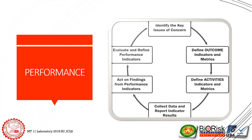The last component of the AMP model is performance. It includes control, assurance, and improvements, and constantly monitors and evaluates mitigation measures to see that they are working as planned. Otherwise, a corrective action will be planned and implemented to protect the entire institution from biological agents and corresponding toxins. The performance component is a constant cycle of identifying issues, defining outcomes and activities, data collection, acting on findings, evaluating, and refining performance indicators.